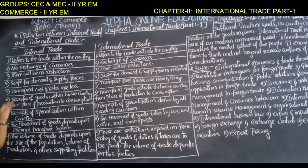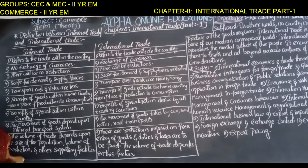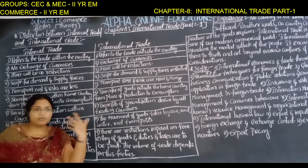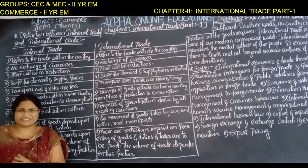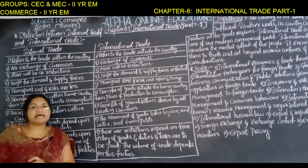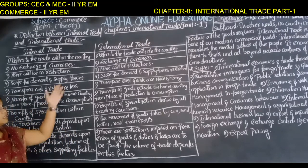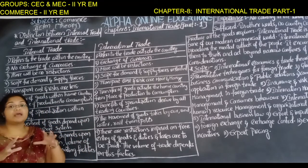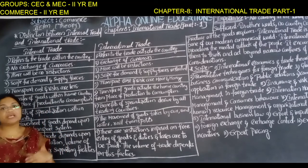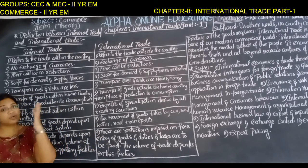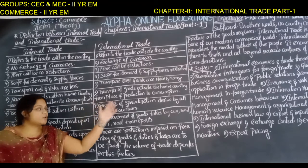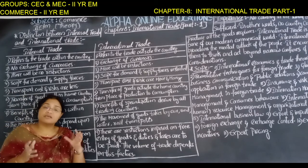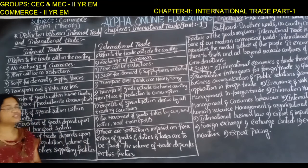In internal trade, there are no major restrictions — you can trade as much as you want with few limitations. But in international trade, there are a lot of restrictions, because trade is done between a home country and host countries, resulting in numerous restrictions on the exchange of goods.